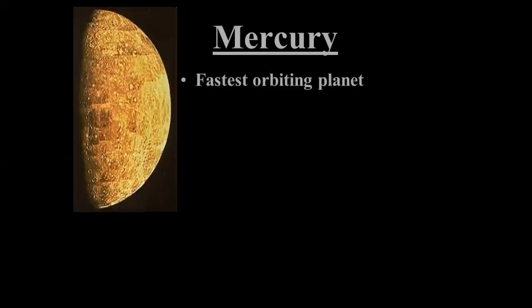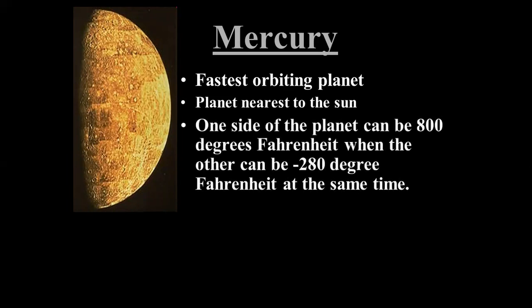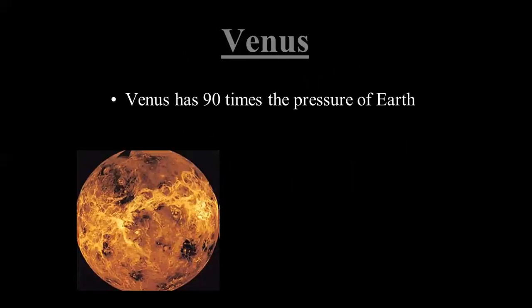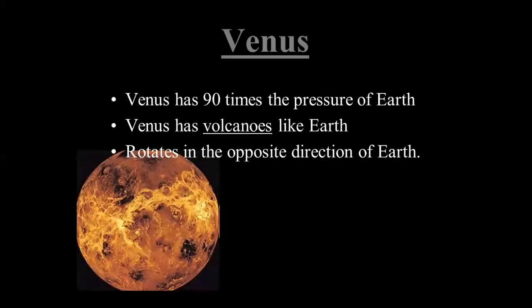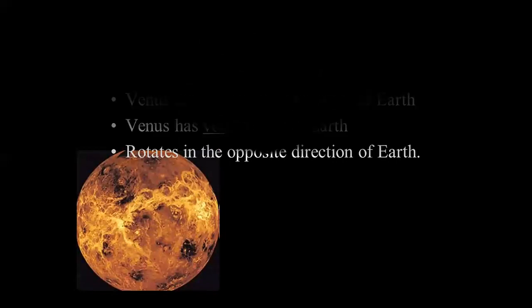The first planet is Mercury, which is closest to the sun. Mercury is the fastest orbiting planet. One side can be 800 degrees Fahrenheit when the other side is negative 280 degrees Fahrenheit at the same time. Next planet is Venus. Venus has 90 times the pressure of Earth. Venus has volcanoes like Earth. It rotates in the opposite direction of Earth. Venus is the hottest planet among all these planets revolving around the sun.